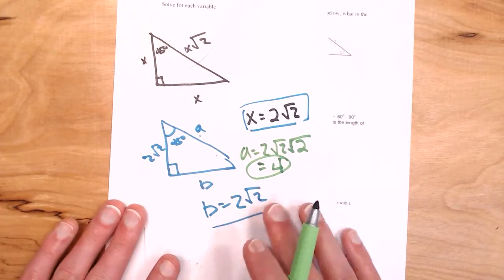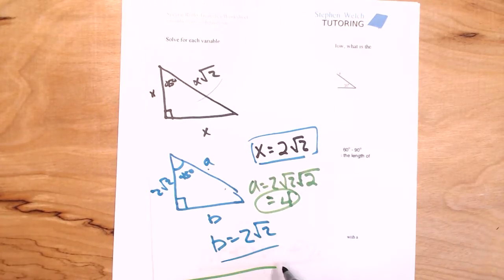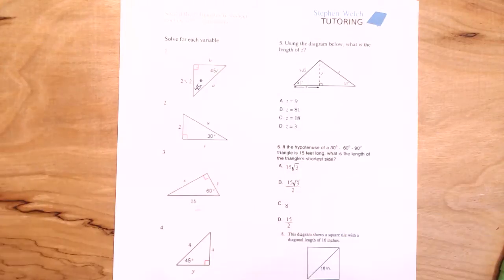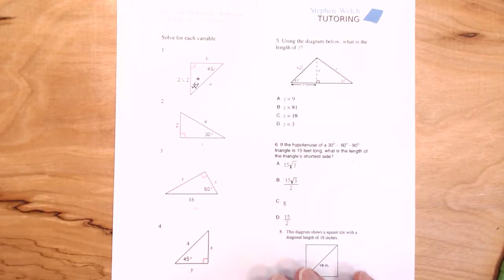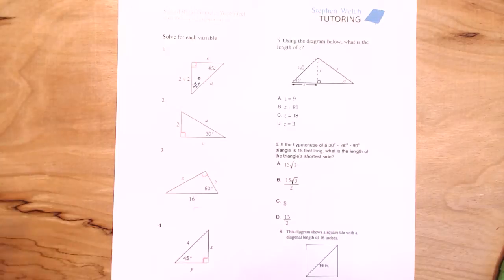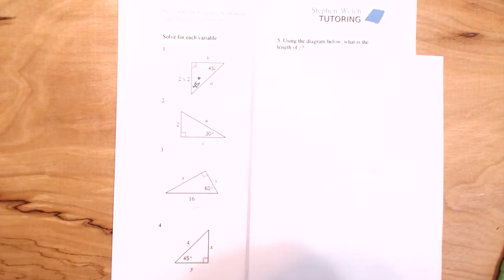If you feel shaky on that, watch this part of the video again. So we solved number one. Number two asks us to find U and V — this is a 30-60-90 triangle. So I'll grab my formula sheet again.